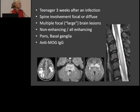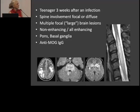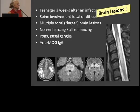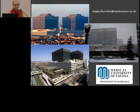It is necessary that we understand pathology — what is the patient reacting against? To summarize ADEM: think of it in a teenager, three weeks after infection. Spinal cord is focal or diffusely involved. Lesions are large, and may or may not be enhancing. Think of diffuse pons involvement, symmetric basal ganglia, brain lesions, and use the combination of tests to help in the differential diagnosis.